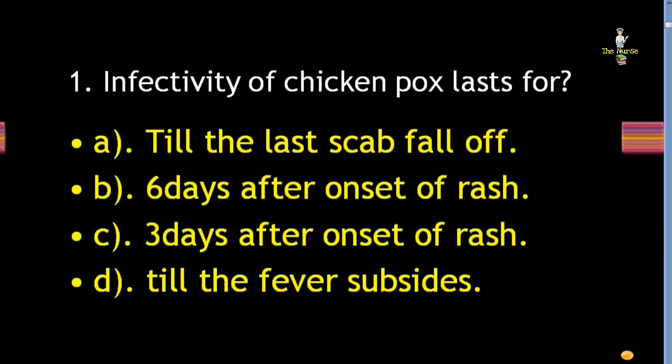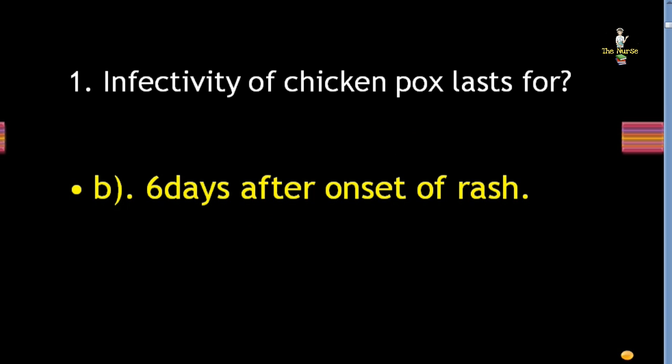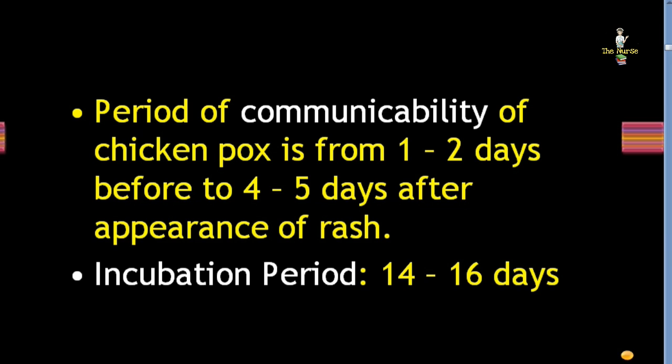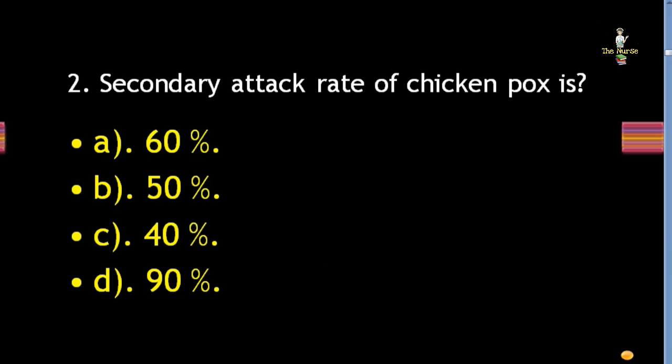Question 1: Infectivity of chicken pox lasts for how long? Options: till the last scab falls off, six days after onset of rash, three days after onset of rash, or till the fever subsides. Correct answer is six days after onset of rash. Period of communicability of chicken pox is from one to two days before to four to five days after appearance of rash.